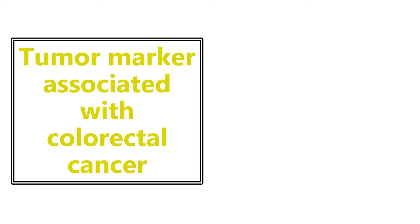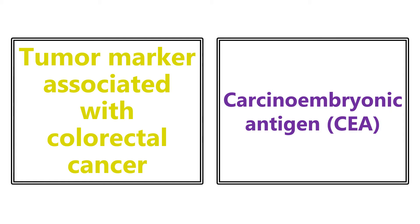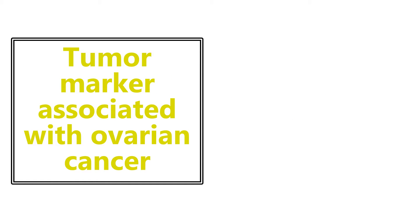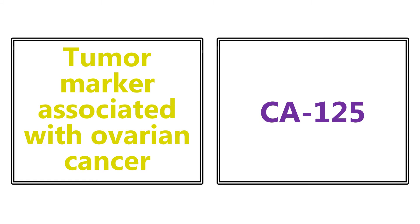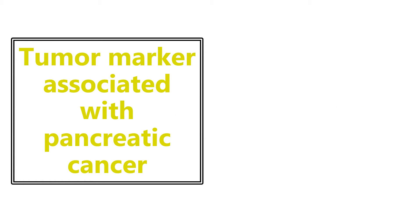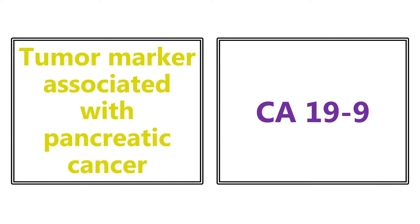Tumor markers you need to know: for colorectal cancer, it's carcinoembryonic antigen, also known as CEA. For ovarian cancer, it's CA-125. And for pancreatic cancer, it's CA-19-9. Those three are high yield — they may give you the diagnosis and ask the tumor marker, or give you the marker and ask the diagnosis. Make sure you have those memorized.